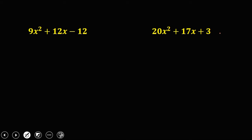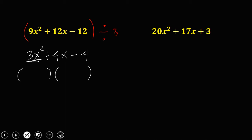For the third example, 9x squared plus 12x minus 12. Note that we can simplify by dividing everything by 3: that gives 3x squared plus 4x minus 4. Now applying trial and error: factors of 3x squared are 3x times x, and factors of 4 are 2 times 2.